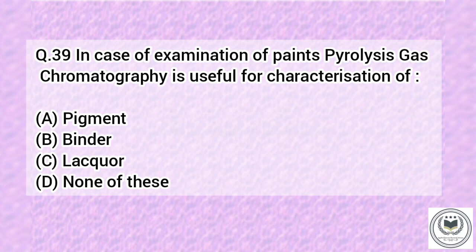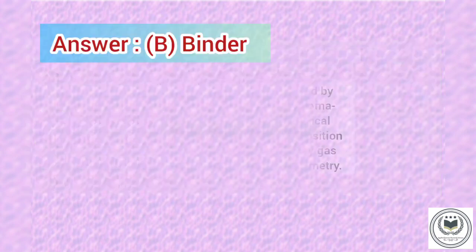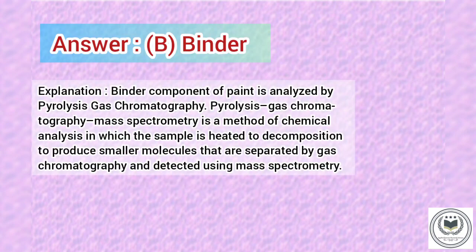Question 39. In case of examination of paint's pyrolysis, gas chromatography is useful for characterization of: Option A: Pigment. Option B: Binder. Option C: Lacquire. Option D: None of the above. Answer is Option B, Binder.